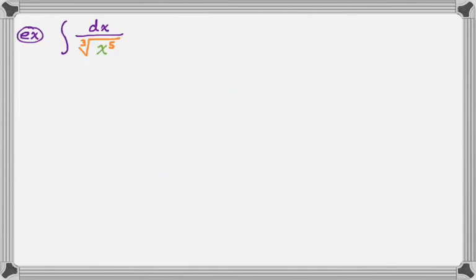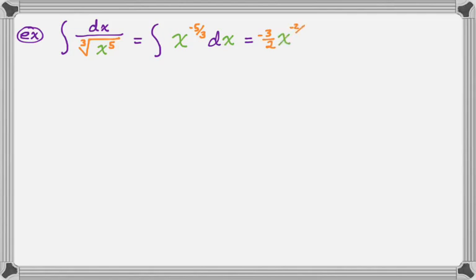Let's take a look at two more examples. We want the integral of dx over the cube root of x to the 5th. Rewriting with a negative rational exponent — bringing everything to the numerator — gives x to the negative 5/3. Adding 1 gives negative 2/3, and the reciprocal is negative 3/2, so the result is (-3/2)x to the negative 2/3 plus C. There's not usually a compelling reason to rewrite this in radical form, so we'll leave it.